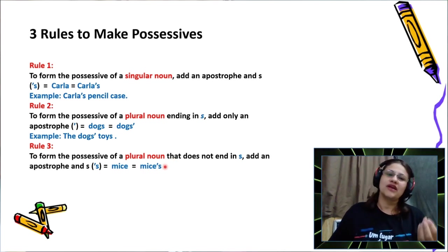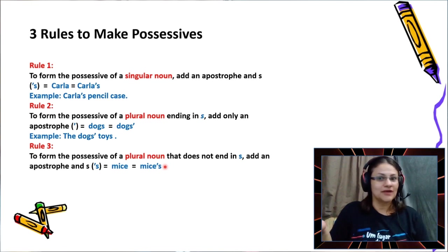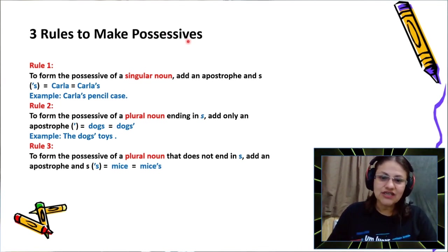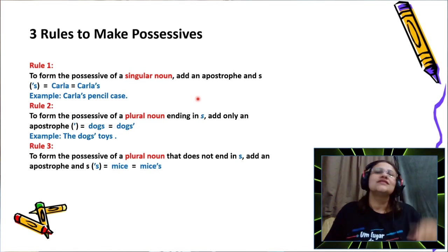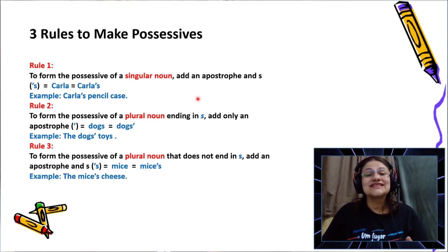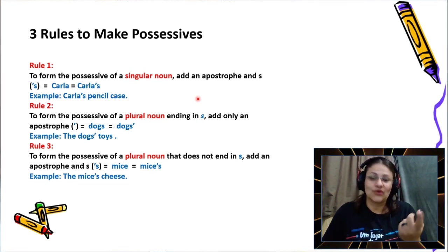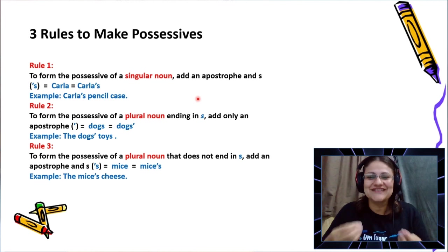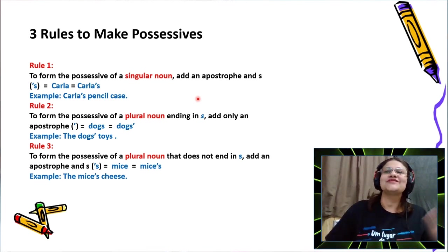Another example of an irregular plural: women. Women is the plural of woman — one woman, two women. If I want to make the possessive, I add apostrophe and an S: women's. For example: the mice's cheese — I have a lot of mice fighting for one piece of cheese, so it's the mice's cheese.